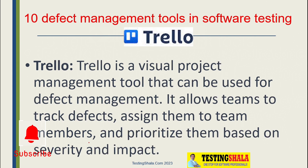The next type of tool is Trello. Trello is a visual project management tool which we can use to manage and track defects, assign them to various team members, and also prioritize them. We can assign severity and impact as well for each defect using Trello.